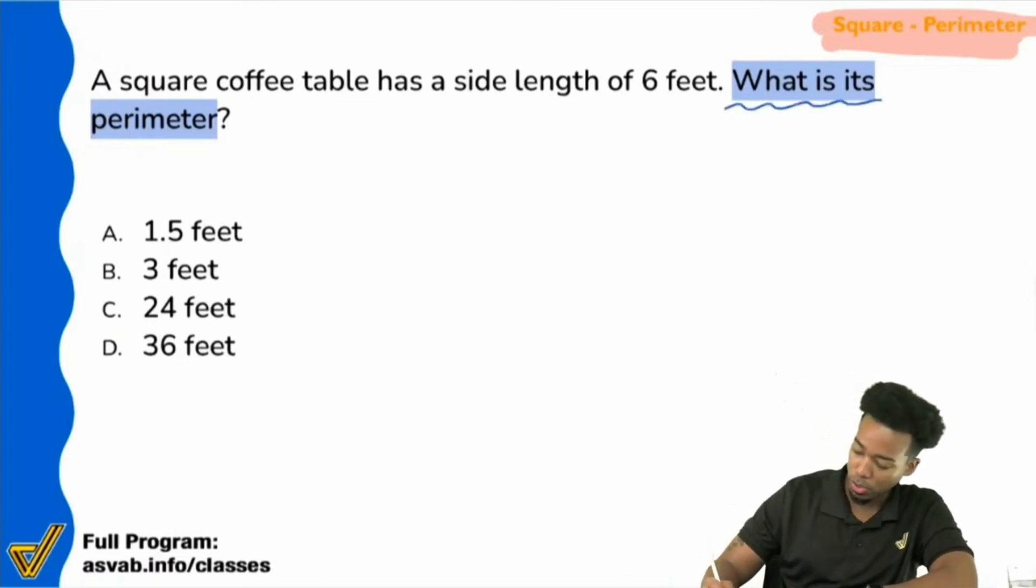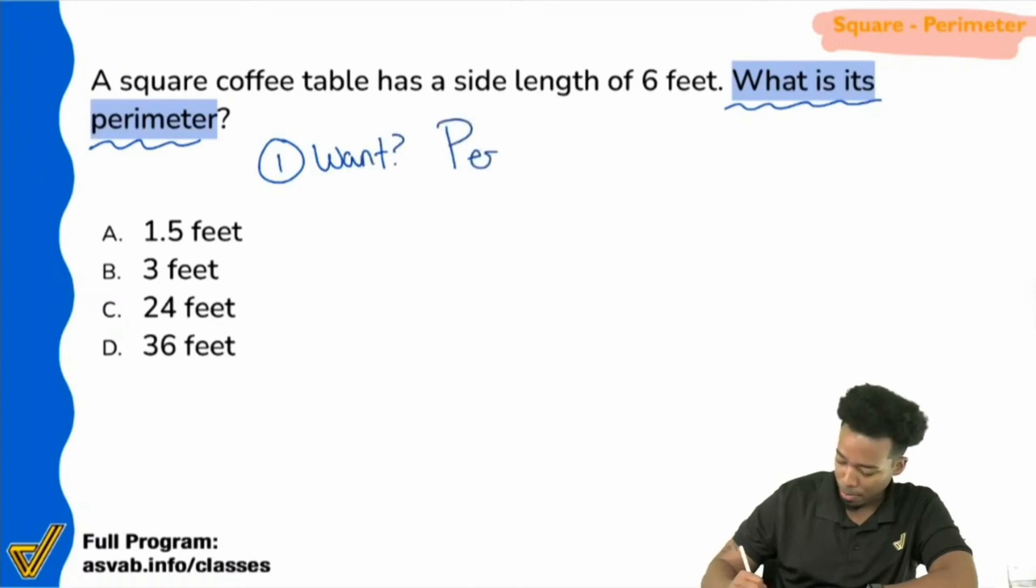Remember, the first thing you're always doing is reading the question. Step number one, read the question. What do you want? And what we want is the perimeter.